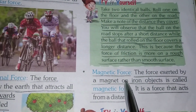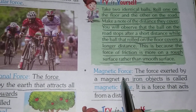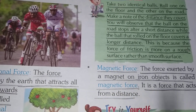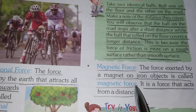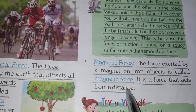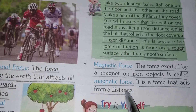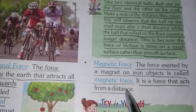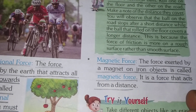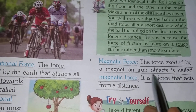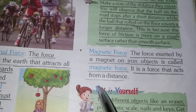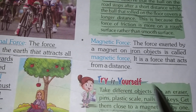Now we will do magnetic force. The force exerted by a magnet on iron objects is called magnetic force. You have seen that nails and pins brought near a magnet get attracted — that is due to magnetic force. It is a force that acts from a distance.